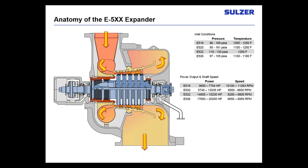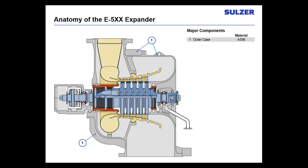Looking at inlet and exhaust conditions, power, and shaft speed across the various sizes — the inlet conditions are all fairly similar. The pressure is not extremely high like a steam turbine; it's more akin to a gas turbine in pressure. But the temperatures are nowhere near what a gas turbine would see — it's closer to a steam turbine, so it's kind of an amalgamation between the two. All of them exhaust to atmosphere at a temperature between 500 to 600 degrees.